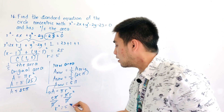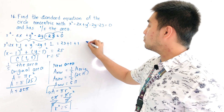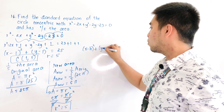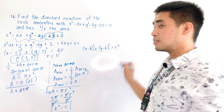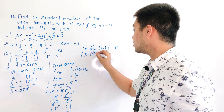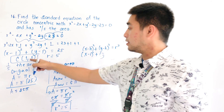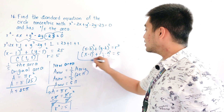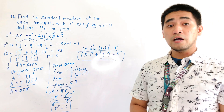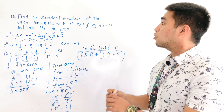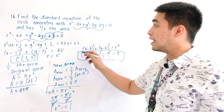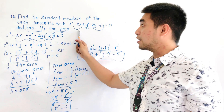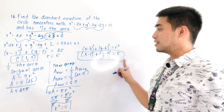We now have the center and the new r squared. Substituting into the standard equation — x minus h, quantity squared plus y minus k, quantity squared equals r squared — we get x minus 1, quantity squared plus y minus 1, quantity squared equals 5. This is the final answer for the standard equation of the circle concentric with the original and having one-fifth its area.